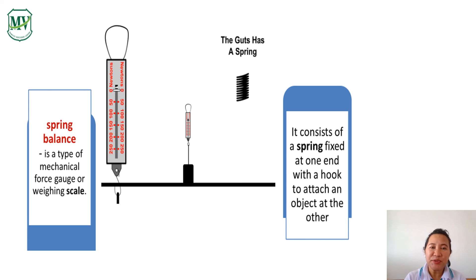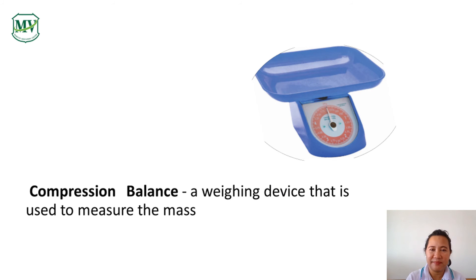There are two devices for measuring weight. First is the spring balance, which is a type of mechanical force gauge or weighing scale — it consists of a spring fixed at one end with a hook to attach an object at the other end. The second is the compression balance, a weighing device used to measure weight.